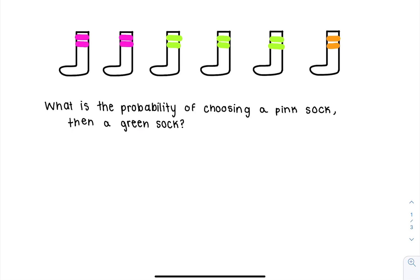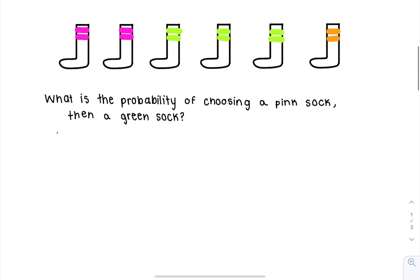So these events are kind of like the probability of pink then green, we can say. When we encounter problems like this, they are independent except for the fact that we have to make sense of the replacement or non-replacement of the socks.